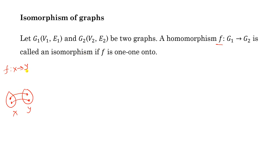The second condition is onto. Onto means for every element yi in Y, there exists an element xi in X such that f(xi) = yi. It means no element in Y is left without a mapping — every element of Y is the image of some element of X. Then we say the mapping is onto.